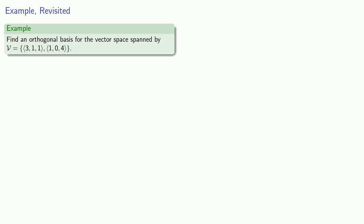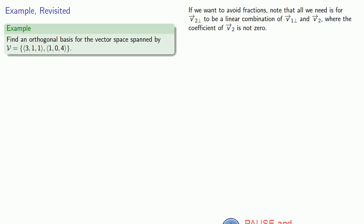If we want to avoid fractions, note that all we actually need is for v̄₂⊥ to be a linear combination of the basis vector we're keeping and the basis vector we're replacing, where the coefficient of the vector we're replacing is not equal to zero. So, as before, we'll let our first basis vector be the original first vector, and we'll let our new basis vector be a linear combination of the basis vectors we're keeping and the basis vector we're replacing.